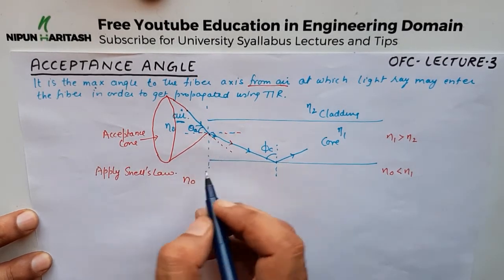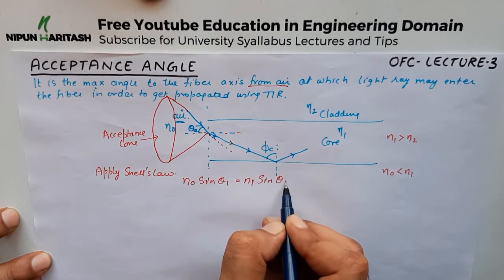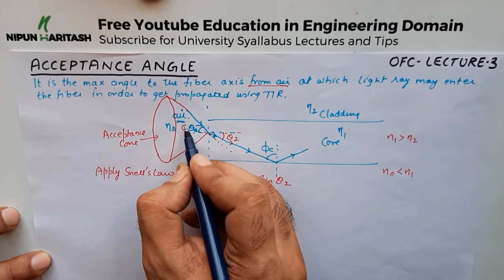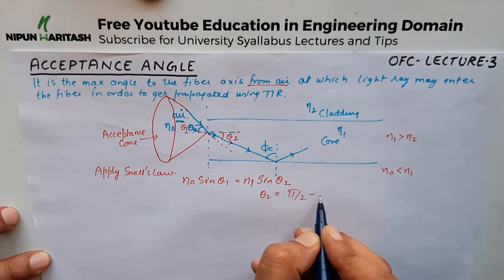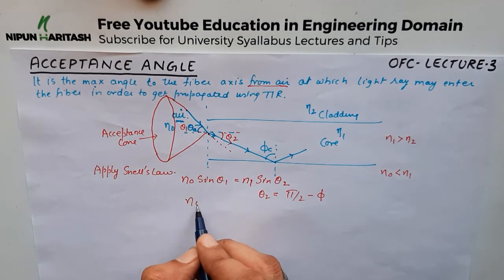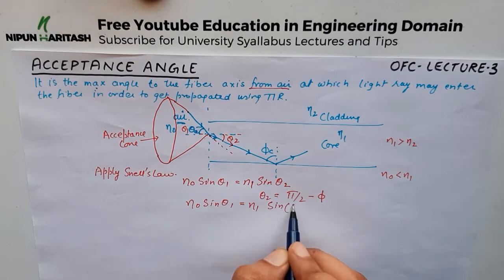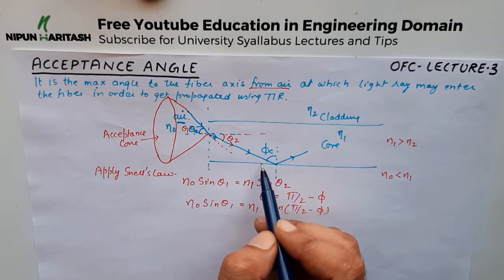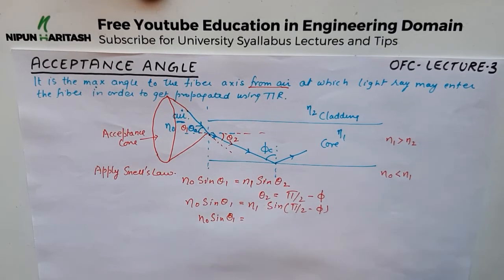At this interface, let theta1 be the angle of incidence in air and theta2 be the angle of refraction in the core. From geometry, theta2 is equivalent to pi by 2 minus phi, where phi is the angle at the core-cladding interface. Applying Snell's law: eta naught times sine of theta1 equals eta1 times sine of (pi/2 minus phi), which gives eta naught times sine of theta1 equals eta1 times cosine of phi.